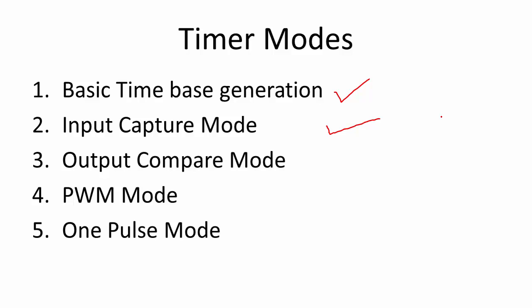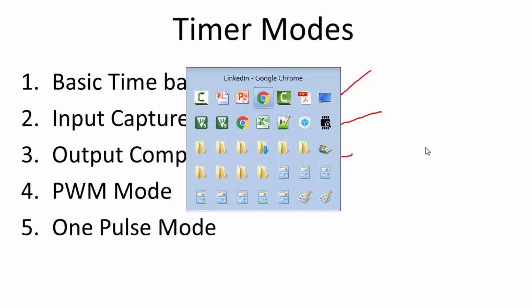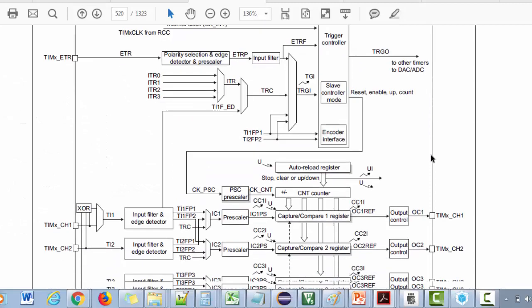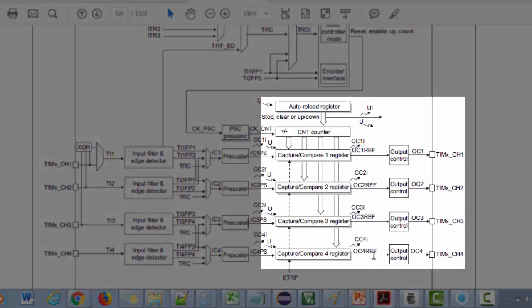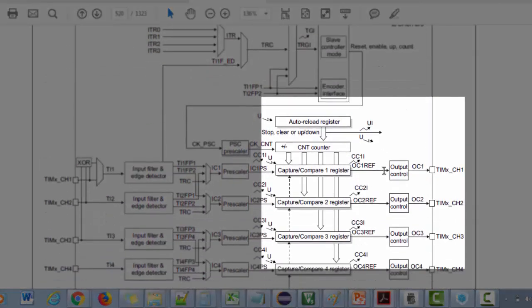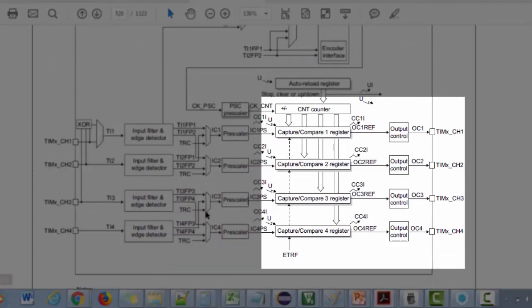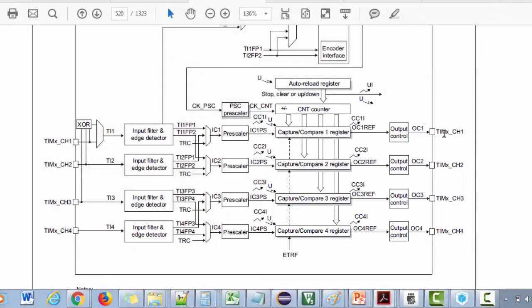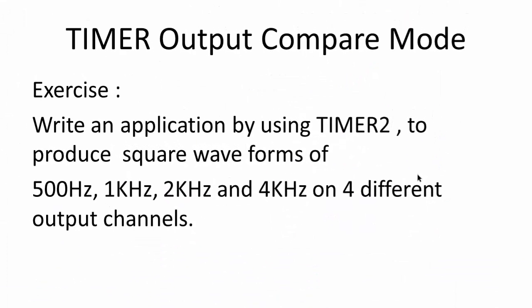In this lecture onwards we are going to explore the output compare mode of the general purpose timer. Basically, we are going to work with the output stage of the general purpose timer. So far we worked with the input stage; now we are going to work with the output stage.